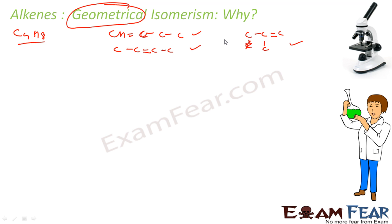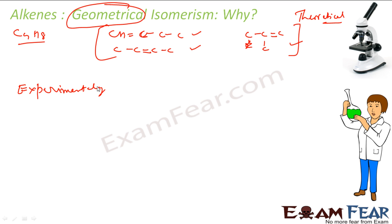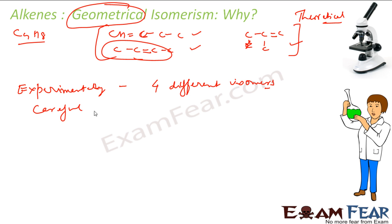But experimentally it was found that there are four isomers of butene. Theoretically, based on structural isomers, scientists expected three isomers for butene. But experimentally, scientists found four different isomers of butene, all with different physical properties. Careful study reveals that bute-2-ene actually has two different isomers — two different orientations of groups about the double bond.